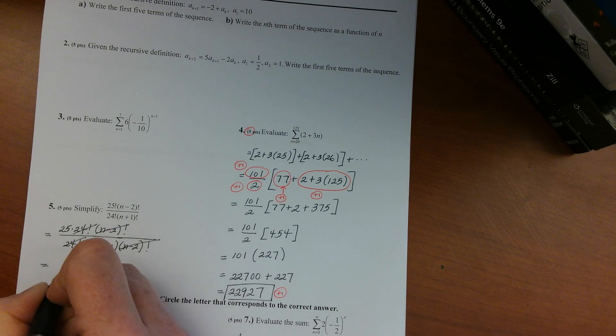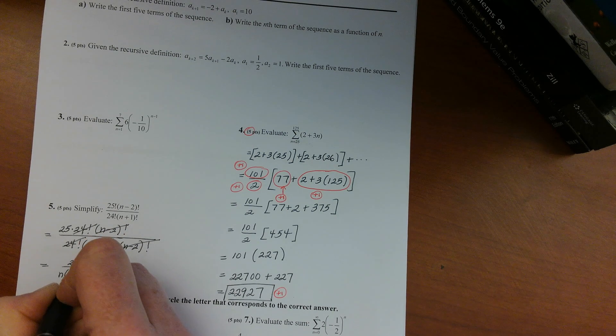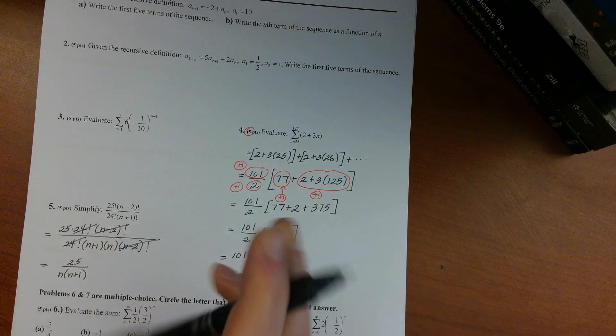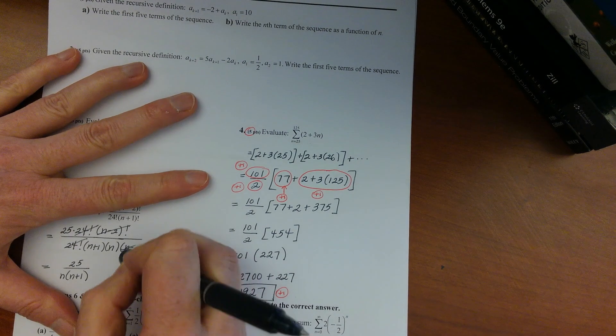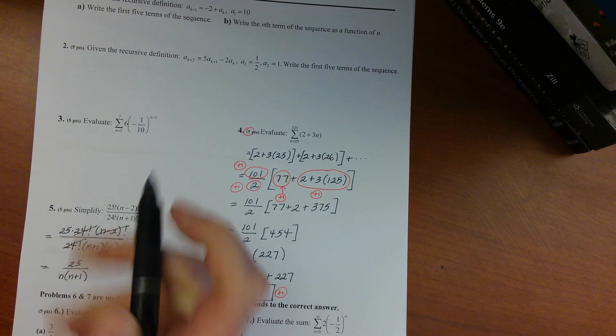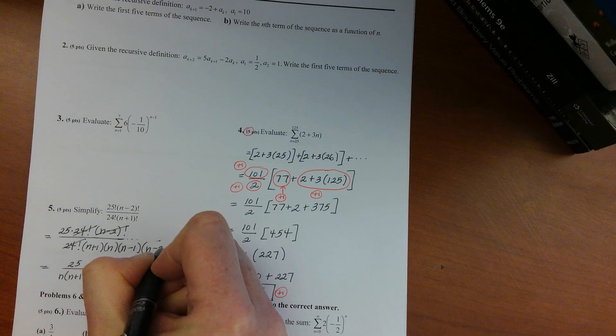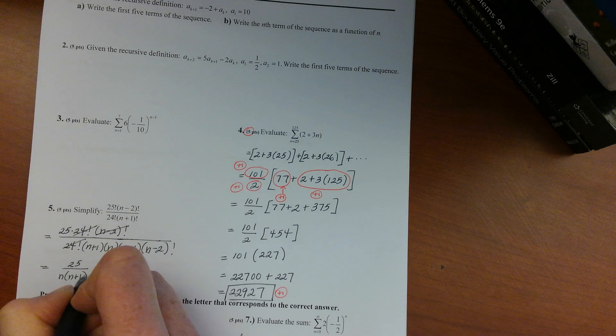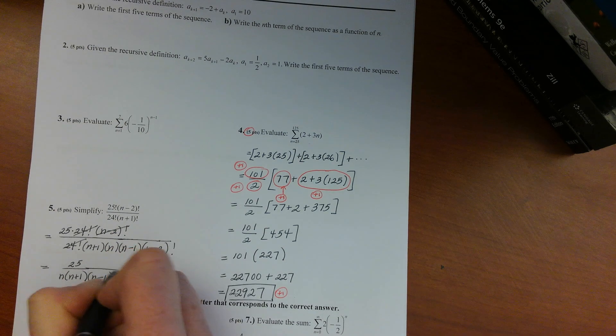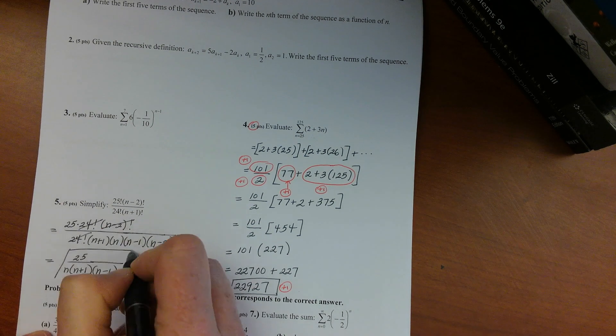You're left with 24 factorial, and then that would equal 25. And then on the bottom you could write it as n times n plus 1. Oh, I feel like I'm missing something. Sorry, after n you'd have n minus 1, and then n minus 2 factorial would be the rest. There we go.